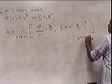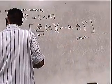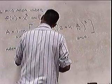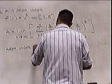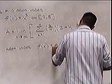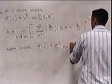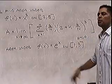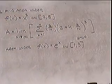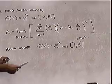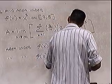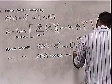Let's do the same thing with two more examples. Find the area under f of x equals e to the x on the interval 1 to 3. Take a moment to write out the formula and then stop. And if you get that one, try to write out the formula for f of x equals cosine x on the interval 0 to pi.